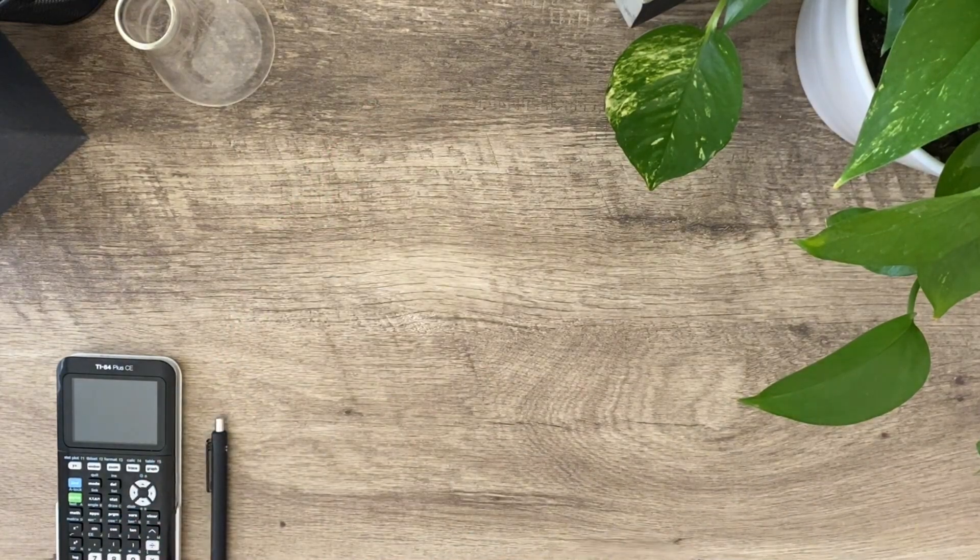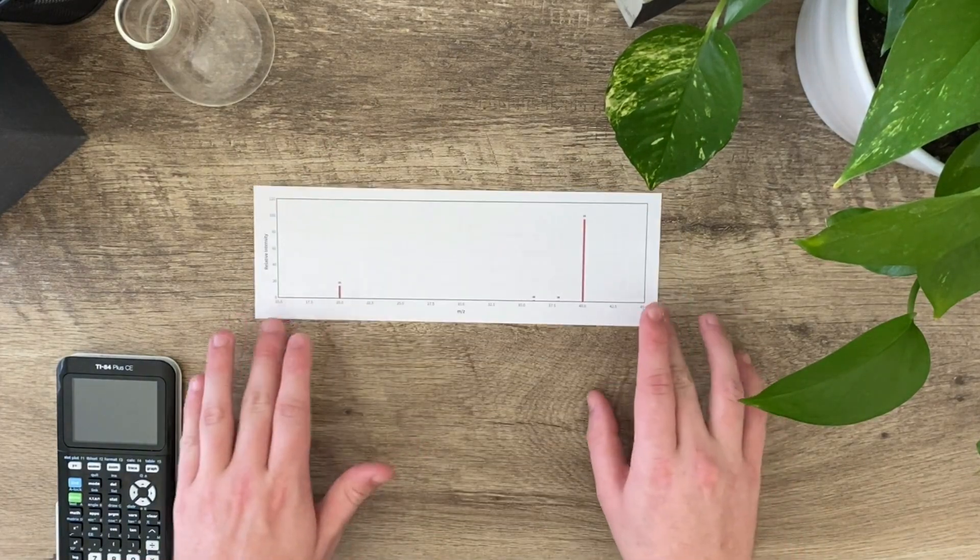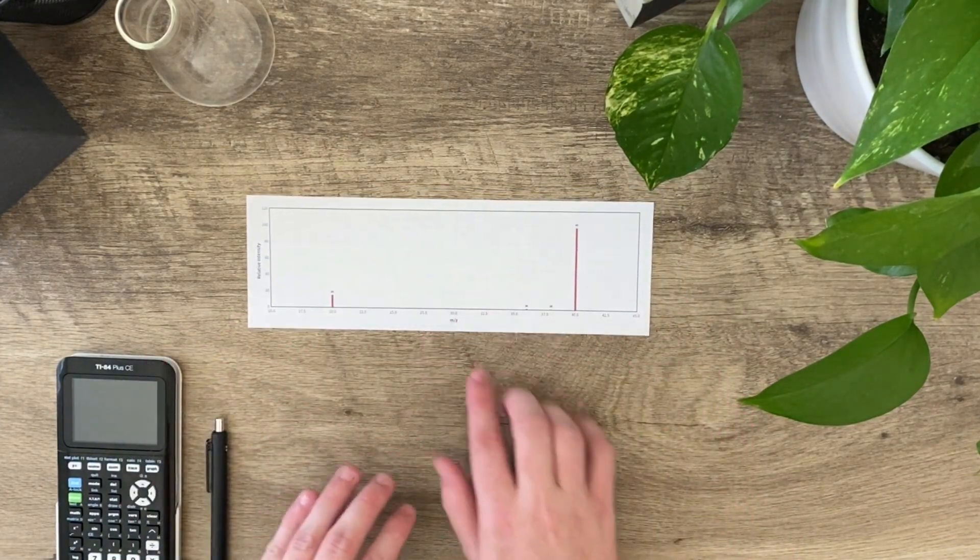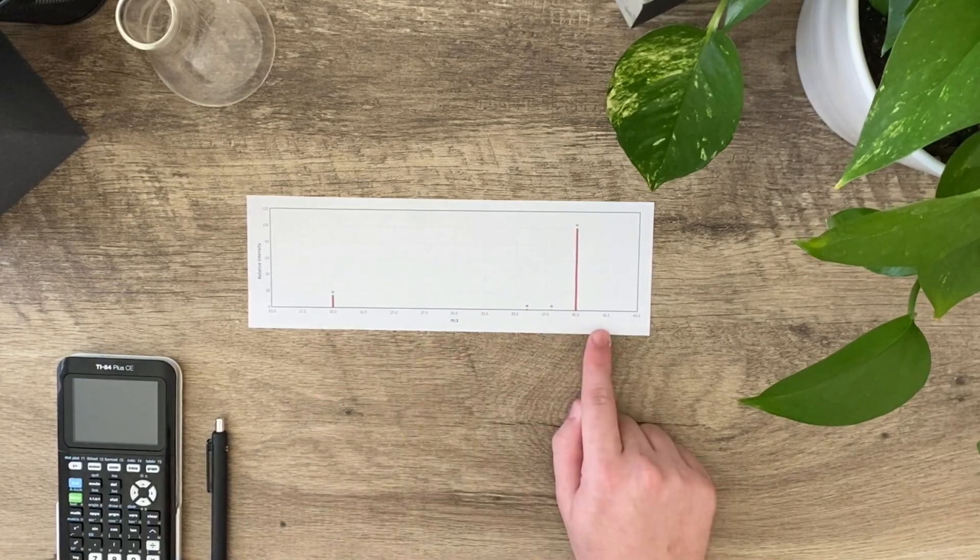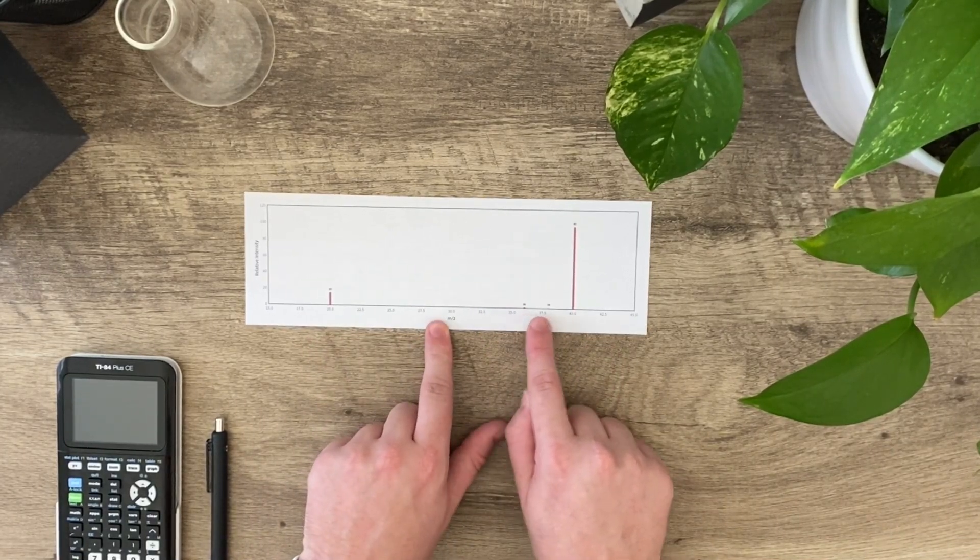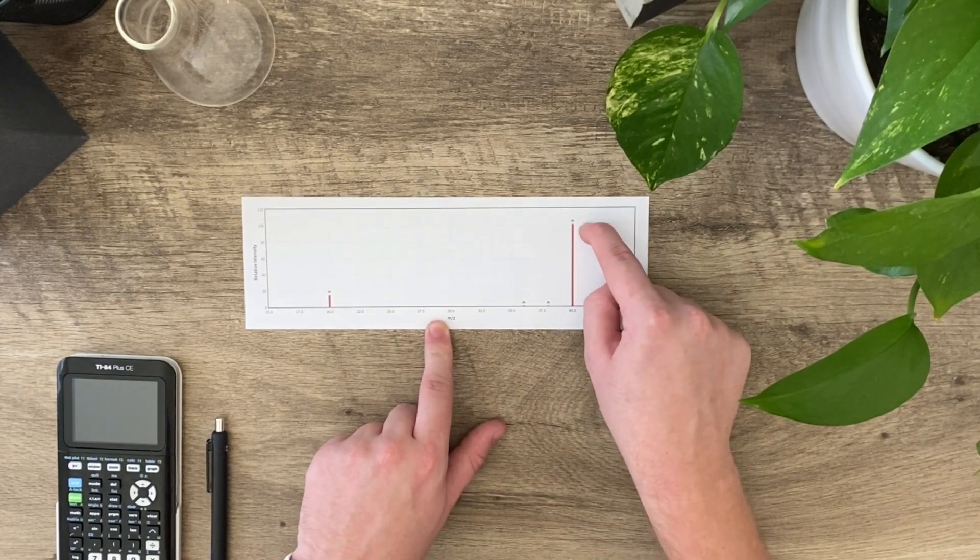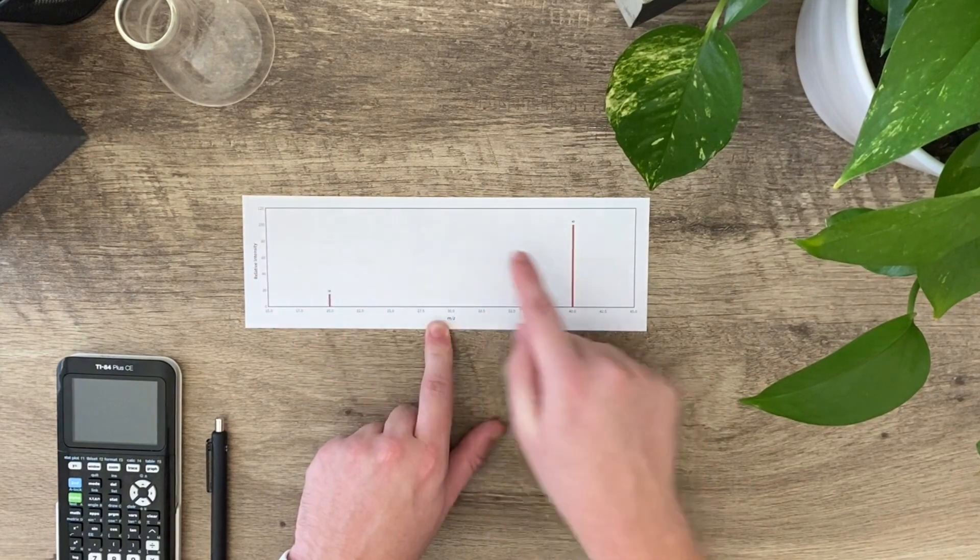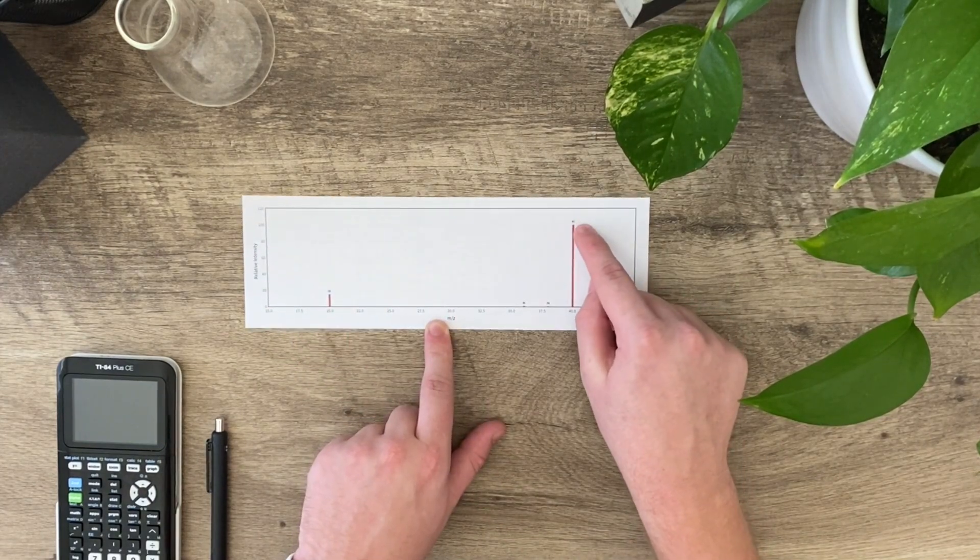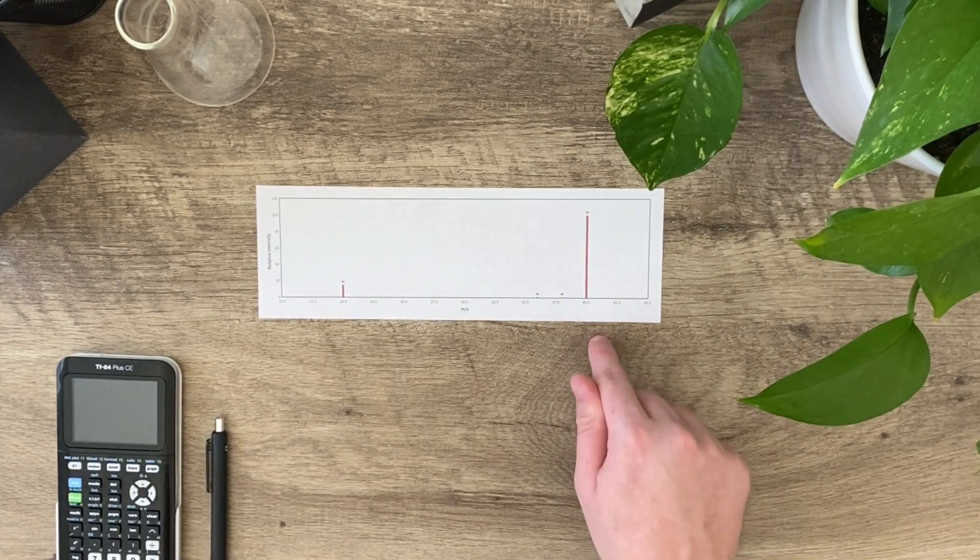Here I have a mass spec of an unknown. I clearly distinctly have four peaks here: one at 20, two really tiny ones at 36 and 38, and one here right at 40. I can see that the intensity is almost completely 40, so the abundance of whatever this atom is should be almost 40.